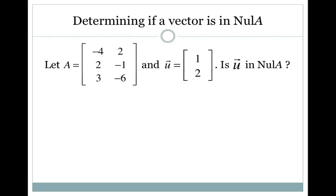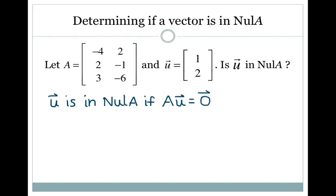For example, say we have matrix A equal to negative 4, 2, 2, negative 1, 3, 6, and vector U equal to 1, 2, and we want to know if that vector is in the null space of A. By definition, U is in the null space of A if AU equals the zero vector. So all we have to do is check.